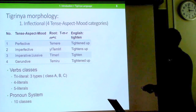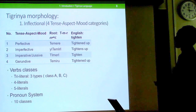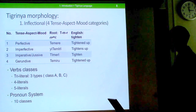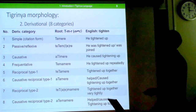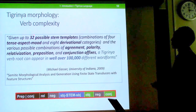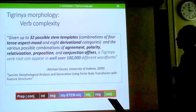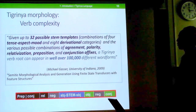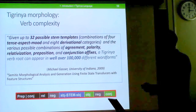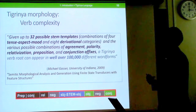There are two ways of doing morphology in Tigrinya. One is the inflectional category, with four tense-aspect-mood categories, different verb classes for each, and a pronoun system with ten classes. The other is the derivational category with about eight different possibilities. Combining all these permutations — 32 possible stem templates along with agreements, polarity, relativization, preposition, and conjunction clitics — one can generate over 100,000 different word forms, indicating that the verb system in Tigrinya is quite complex.